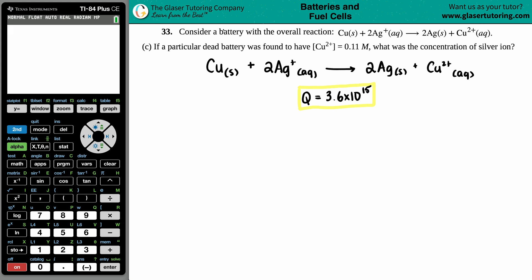Number 33. Consider a battery with the overall reaction, which I wrote down here, is copper solid plus 2 Ag plus aqueous yields 2 Ag solid plus Cu2 plus aqueous. Now we have letter C. If a particular dead battery was found to have a copper 2 plus concentration of 0.11 molarity, what's the concentration of the silver ion?